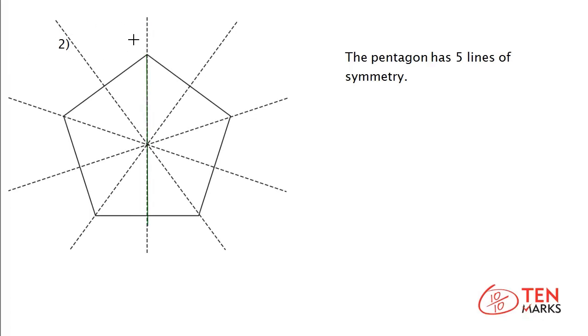Let's count the lines of symmetry. Here's the first one. 2, 3, 4, and the last one, 5.